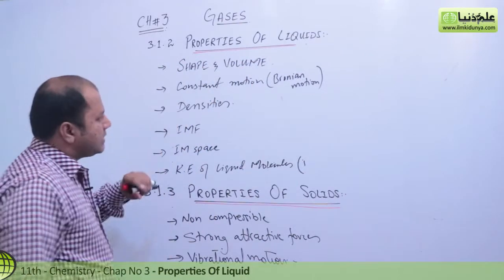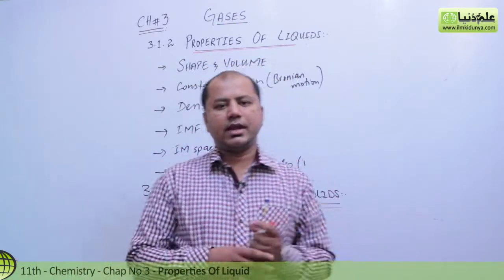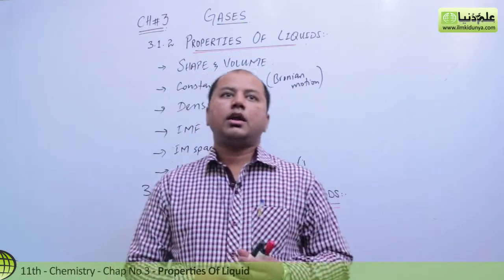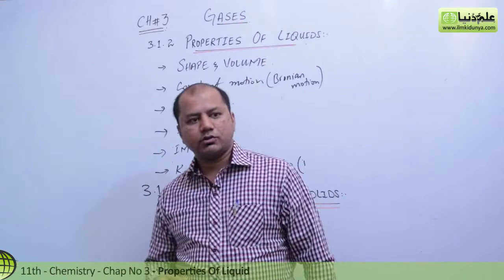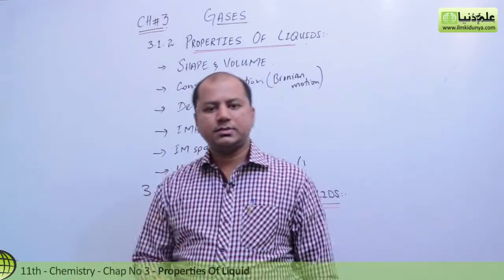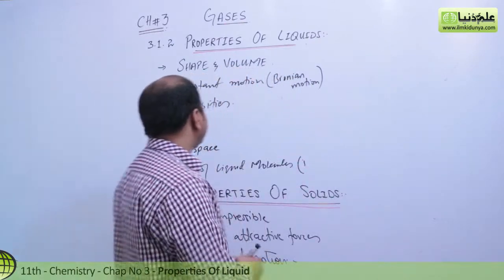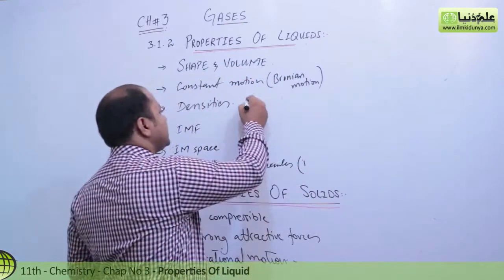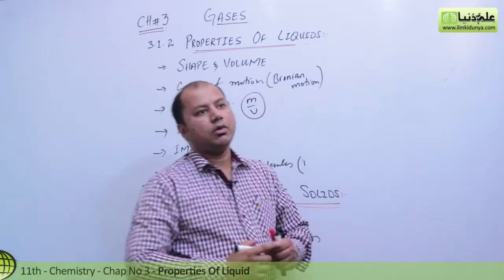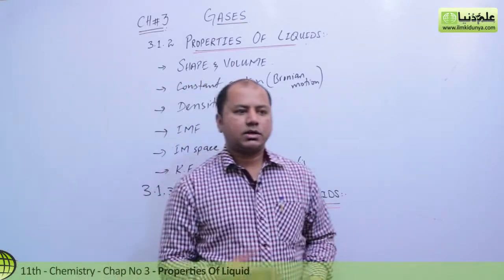If we talk about densities, liquids pack their molecules close together, so they have higher densities compared to gases. But the densities of liquids are generally less than solids. So density, which is mass over volume, depends on the liquid. For example, alcohol density is less than water.